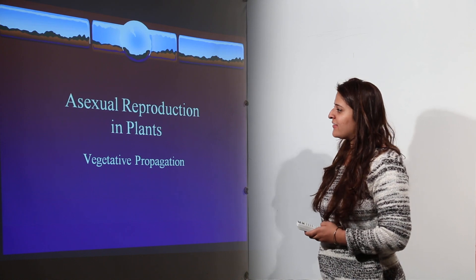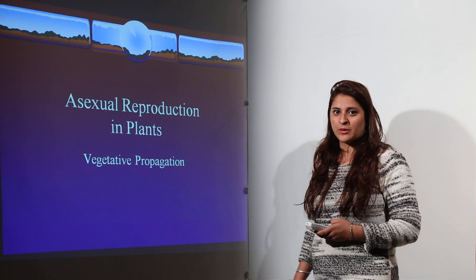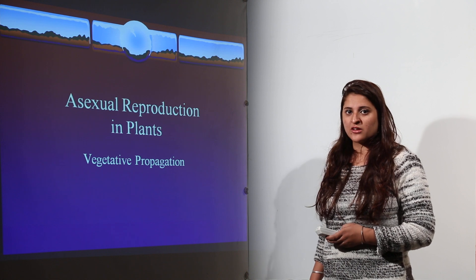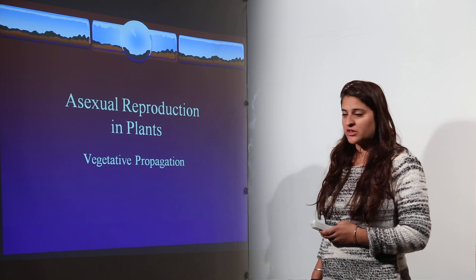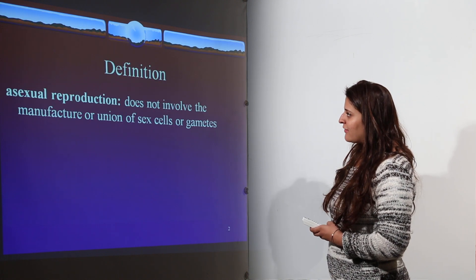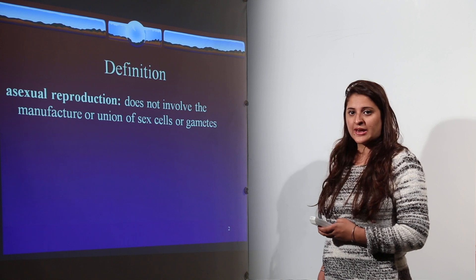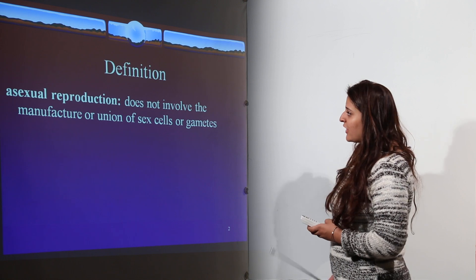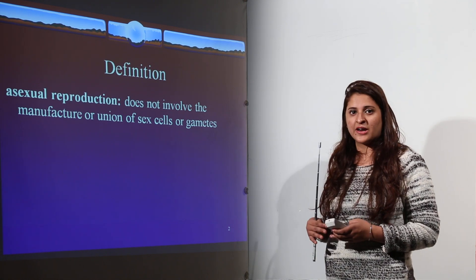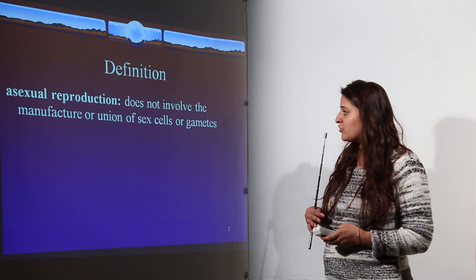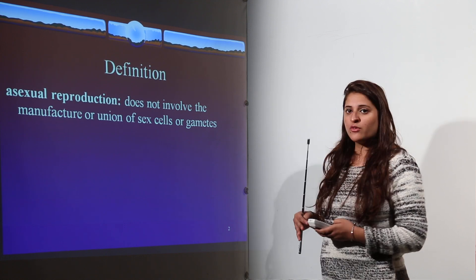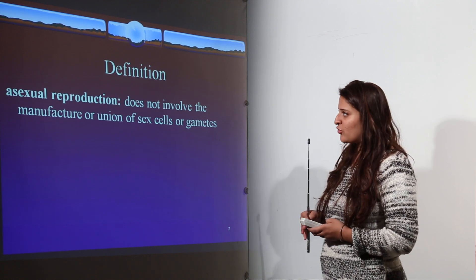Let us start with asexual reproduction in plants, which is also known as one of the methods of vegetative propagation. Asexual reproduction does not involve formation and fusion of the gametes or sex cells, and that's why we call it asexual reproduction.